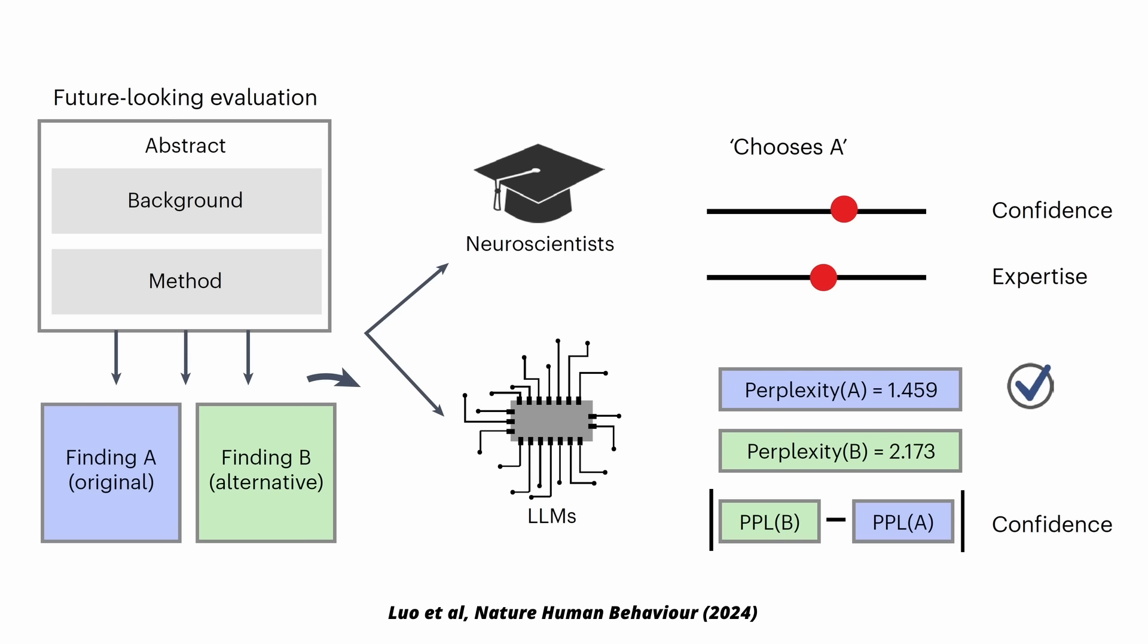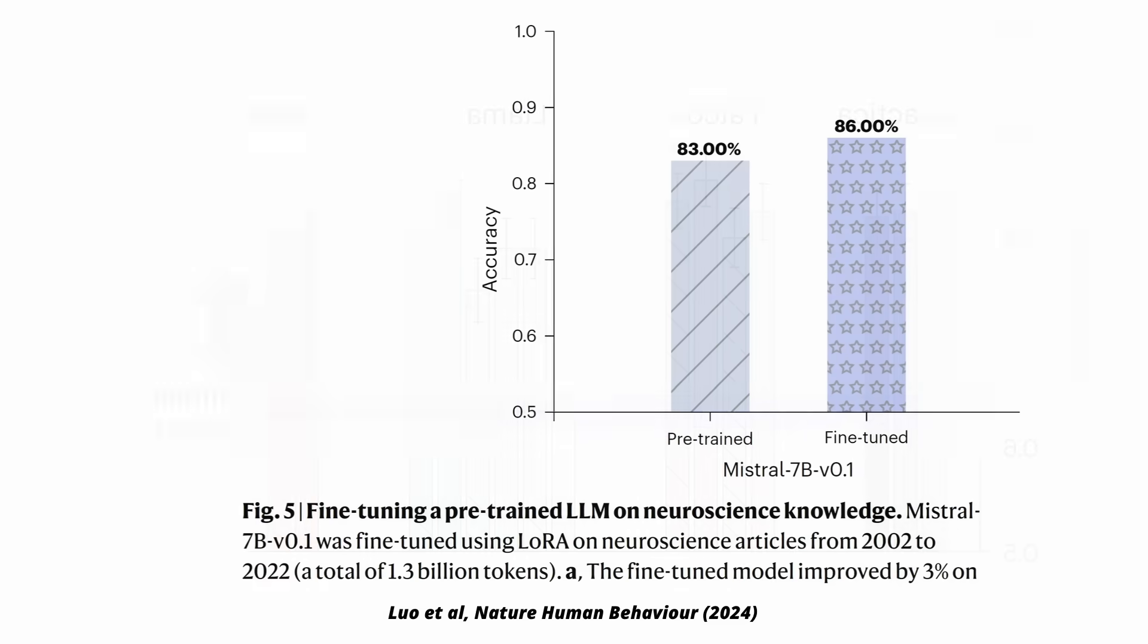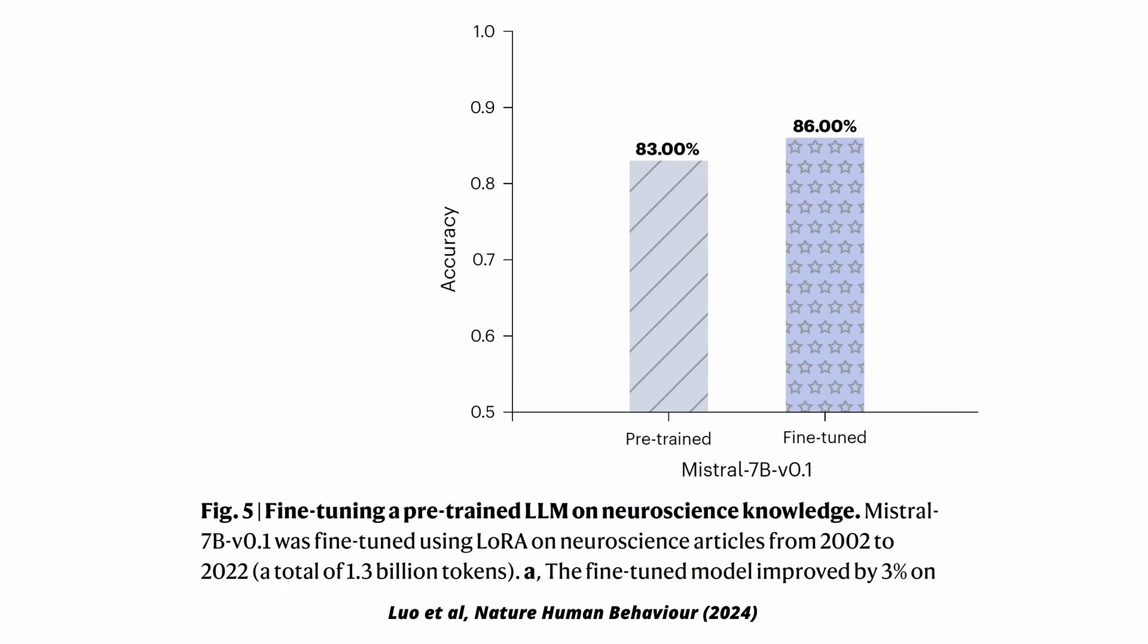Then they recruited about 170 neuroscience experts and presented both the AIs and the human participants with two versions of a neuroscience abstract, one original and one altered with incorrect results, and asked them to identify the correct one. General-purpose LLMs like GPT-4 got it right in about 81% of cases, significantly outperforming human experts, who averaged about 63%. A fine-tuned model further improved the AI performance to almost 85% accuracy.